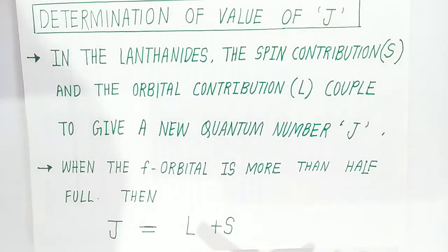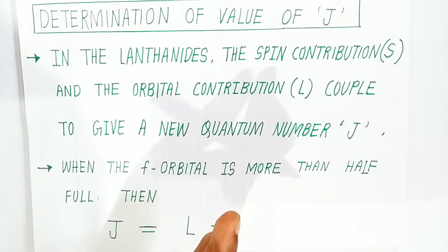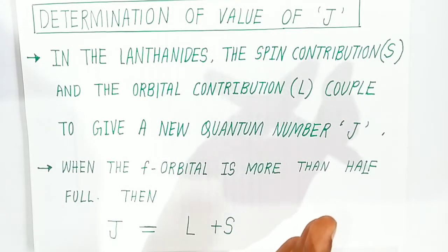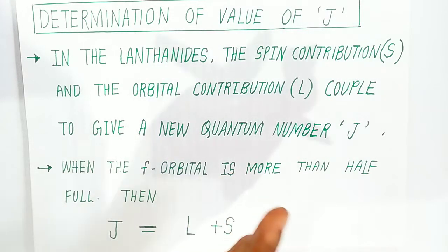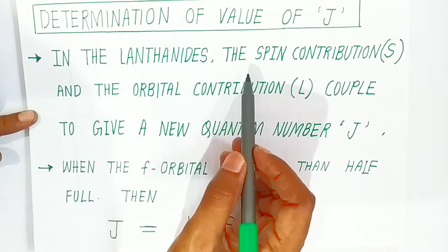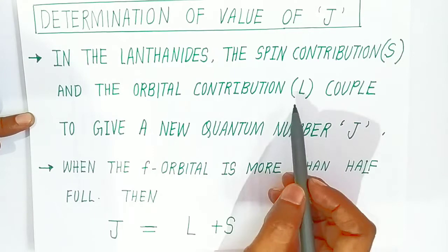Welcome to Bholanath Academy. So far we have determined the values of spin magnetic moment and orbital magnetic moment. Now we are going to determine the value of j. If you want to understand this, you should see my previous video on spin contribution and orbital magnetic moment in the lanthanide series. The spin contribution S and orbital contribution L are the key inputs.